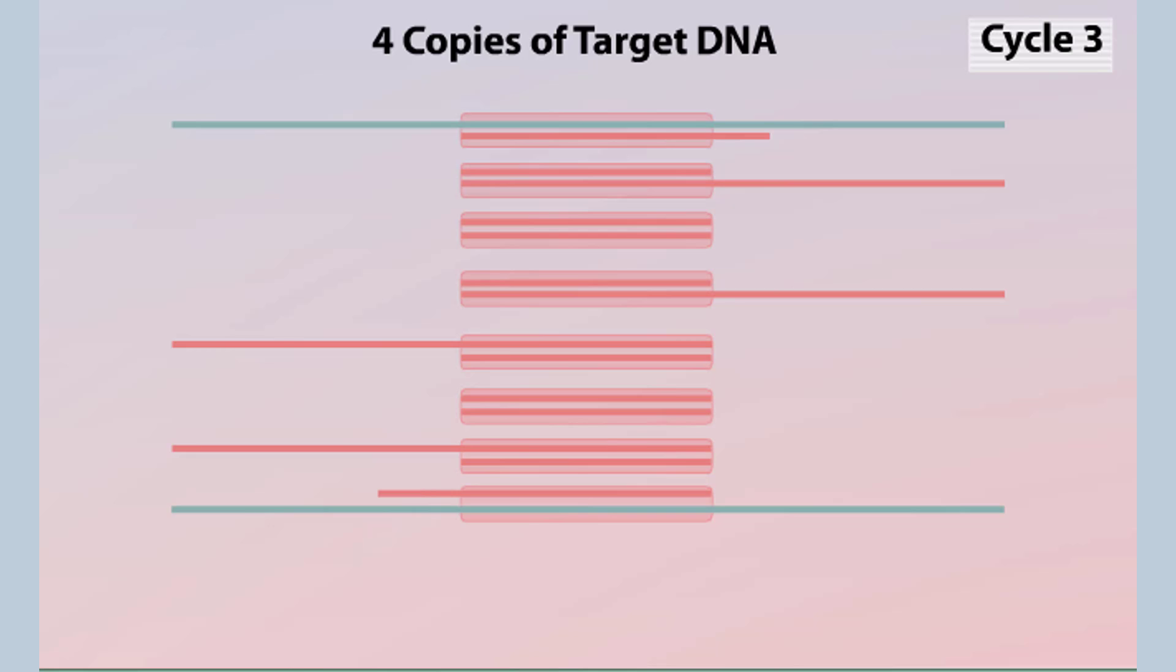After cycle three is finished, there are eight copies of the double-stranded target DNA sequence. Note that only two of the double-stranded copies consist of just the target fragment. The others also include flanking DNA regions.